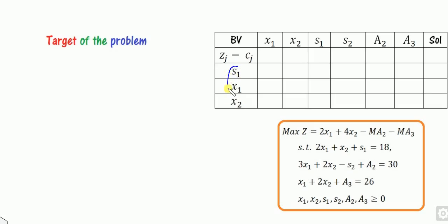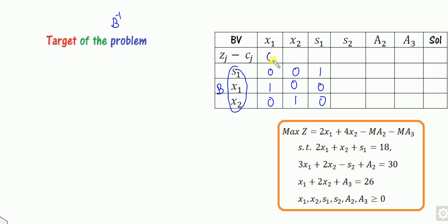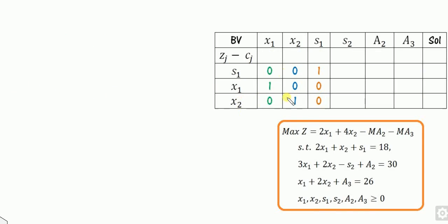Now the starting BFS is given as S1, X1, and X2. So form matrix B. These are the basic variables, and the task is to find only B inverse. Since these are basic elements, the column corresponding to each basic variable is always an identity column. So you have to find seven columns total. The ZJ minus CJ values corresponding to these basic variables are always zero, so you are left with only four columns to find.